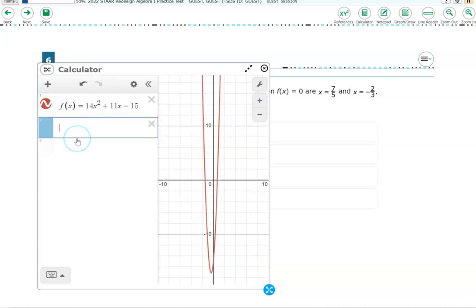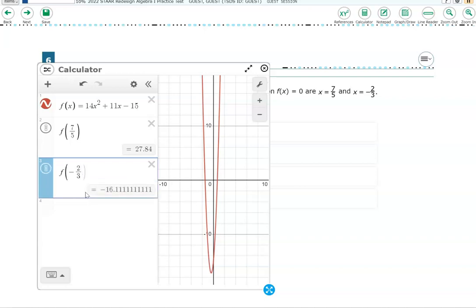So the directions say we want to know, we want f of x to be 0. So that's pretty easy. What we'll do, don't type f of x equals 0. Type f of and put in the x. So the x values they're giving me are 7 fifths. So we'll do 7 divided by 5. I'm going to hit the right arrow and close that. And then the other one is x is negative 2 thirds. So f, open parentheses, negative 2 divided by 3. And you'll right away see these do not equal 0. I want f of x to equal 0, it says right here.